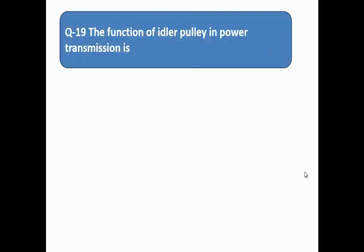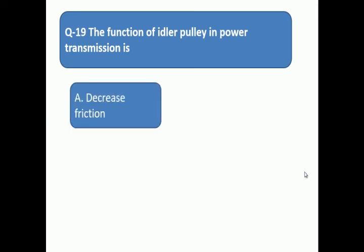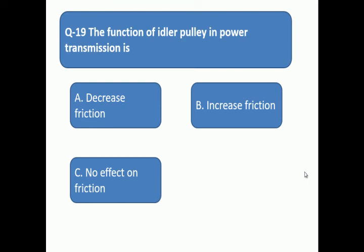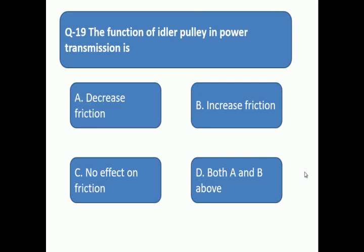Question 19: The function of idle pulley in a power transmission is. What is the function of idle pulley in power transmission? A: decrease friction, B: increase friction, C: no effect on friction, D: both A and B above.